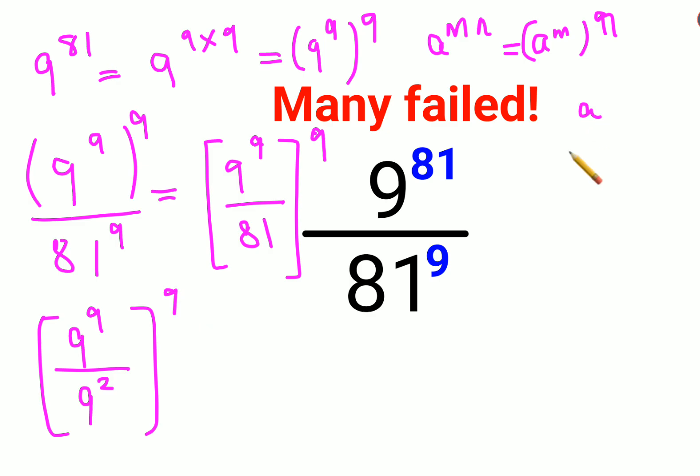Now remember, whenever the base is the same - we have a raised to m upon a raised to n - you can directly take the index and subtract it. So it can be written as a raised to m minus n.